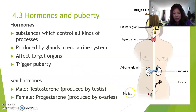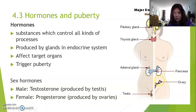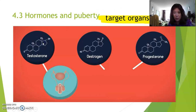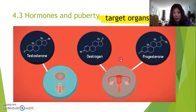In the male, the sex hormone is called testosterone, which is produced in the testes. In the female, there are actually two hormones: progesterone and estrogen, and they're produced in the ovaries. Remember target organs: testosterone is made in the testes and one of its target organs is the testes themselves for sperm production. Estrogen and progesterone are made in the ovaries, but their target organ is the uterus.